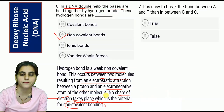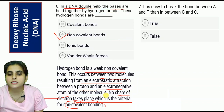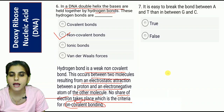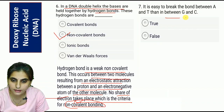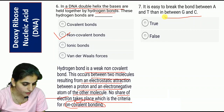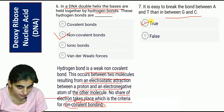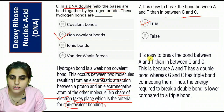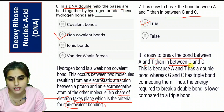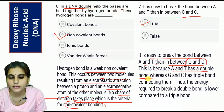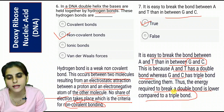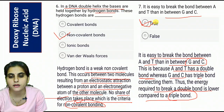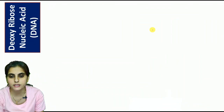Question seven: It is easy to break the bond between A and T than between G and C. The correct option is True. This is because A and T are held together by a double bond, whereas G and C are connected by a triple bond. The energy required to break a double bond is lower than that required to break a triple bond, so it is easier to break the A-T bond.